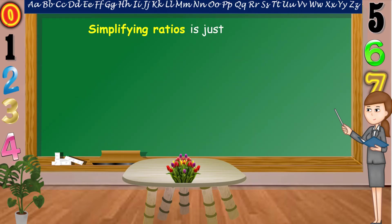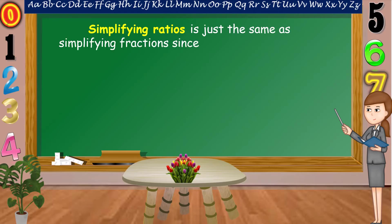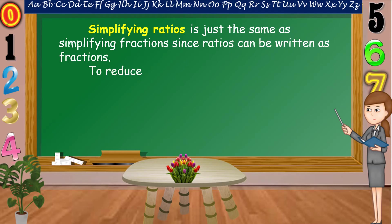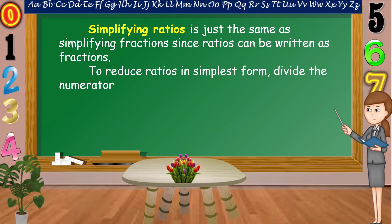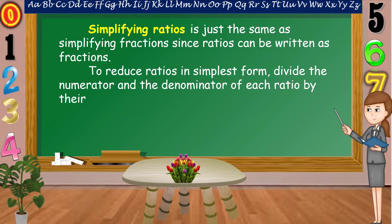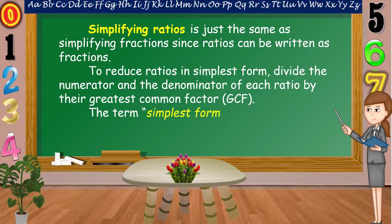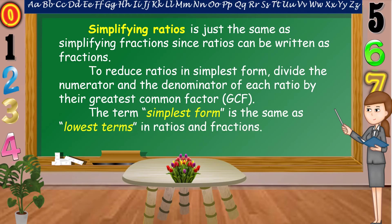Simplifying ratios is just the same as simplifying fractions, since ratios can be written as fractions. To reduce ratios in simplest form, divide the numerator and the denominator of each ratio by the greatest common factor, or the GCF. The term simplest form is the same as lowest terms in ratios and fractions.